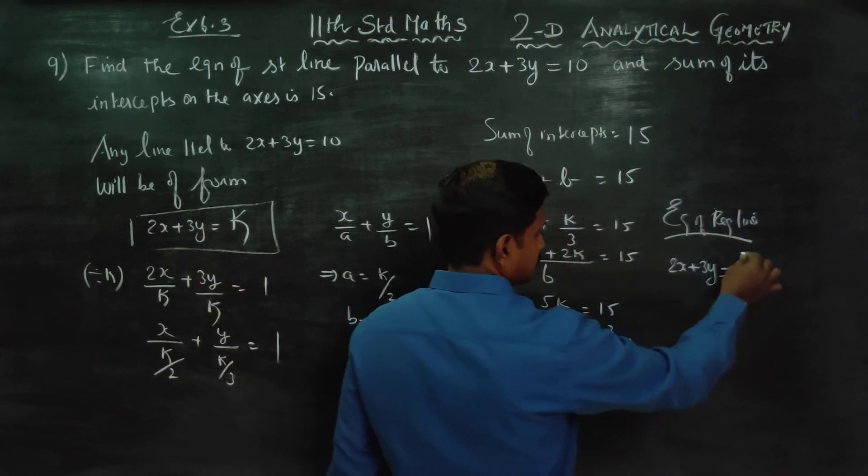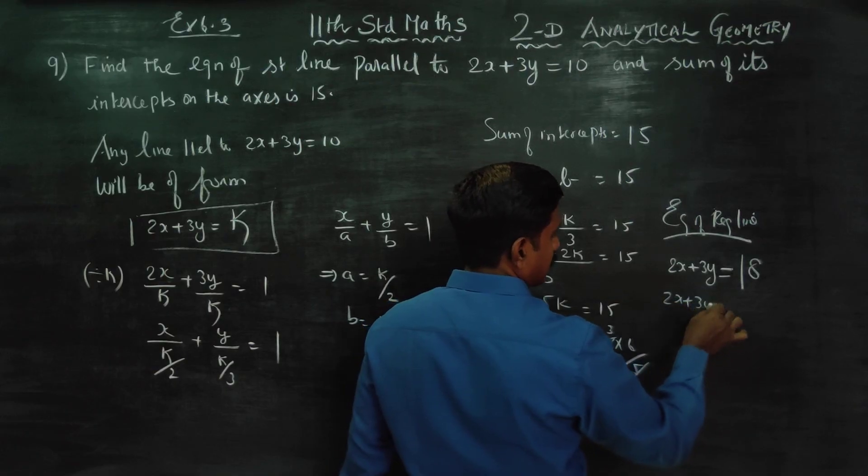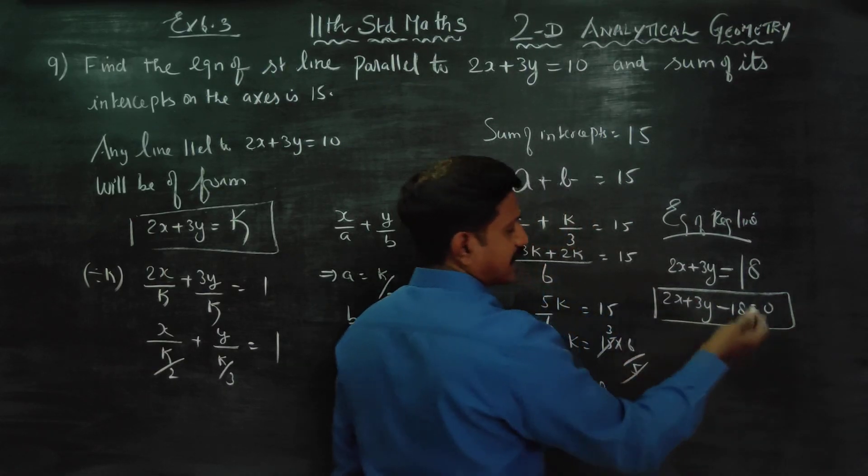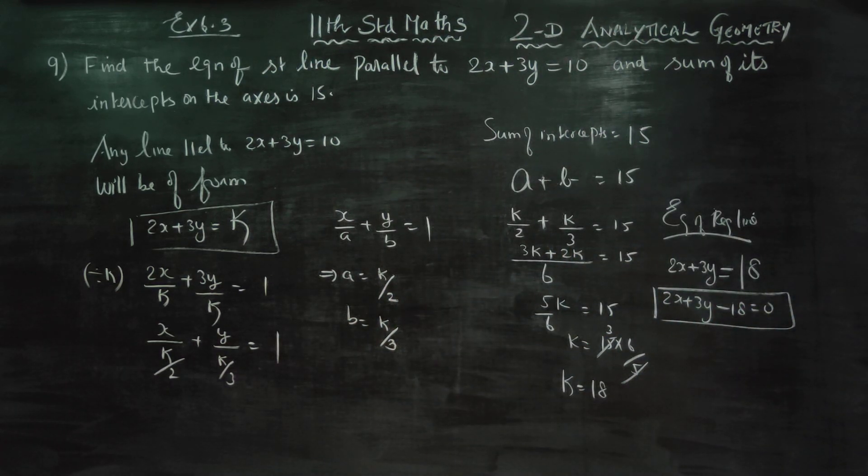So 2x plus 3y minus 18 equals 0 is the standard format, with x, y, and constant. This is the regular format for equation of a straight line. Thank you.